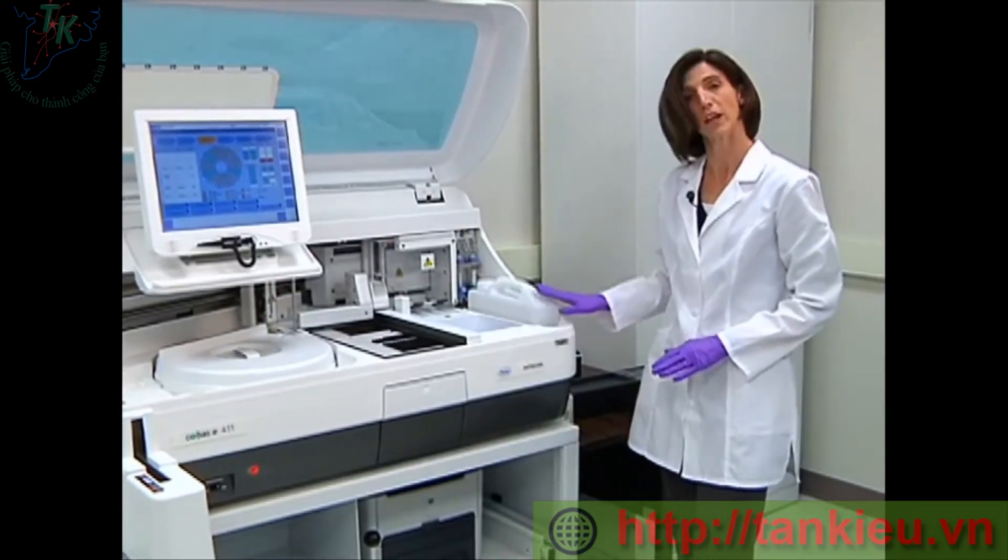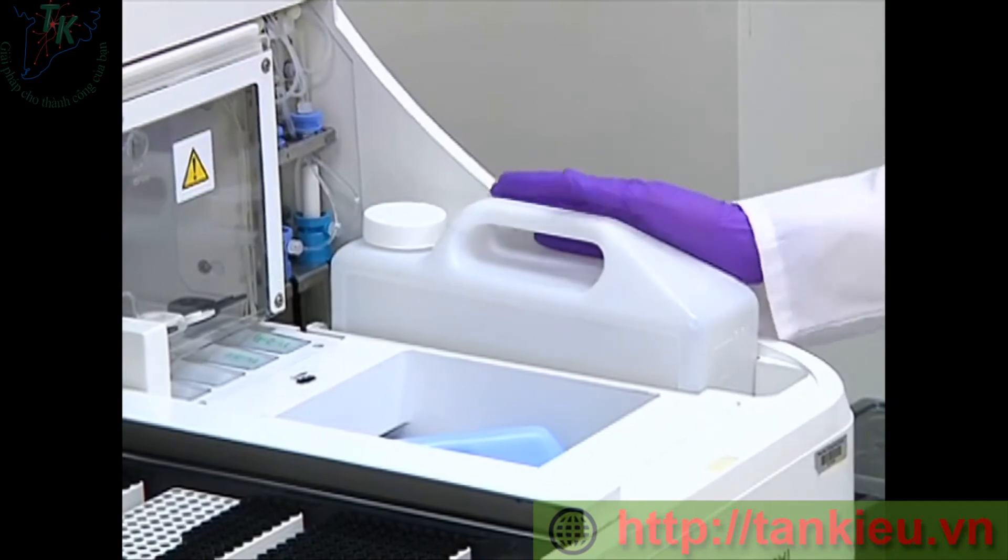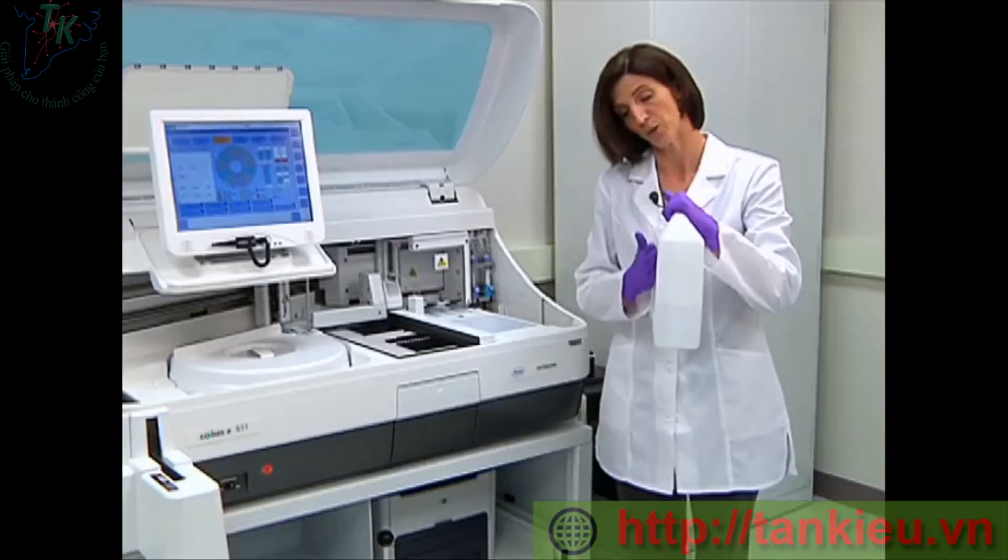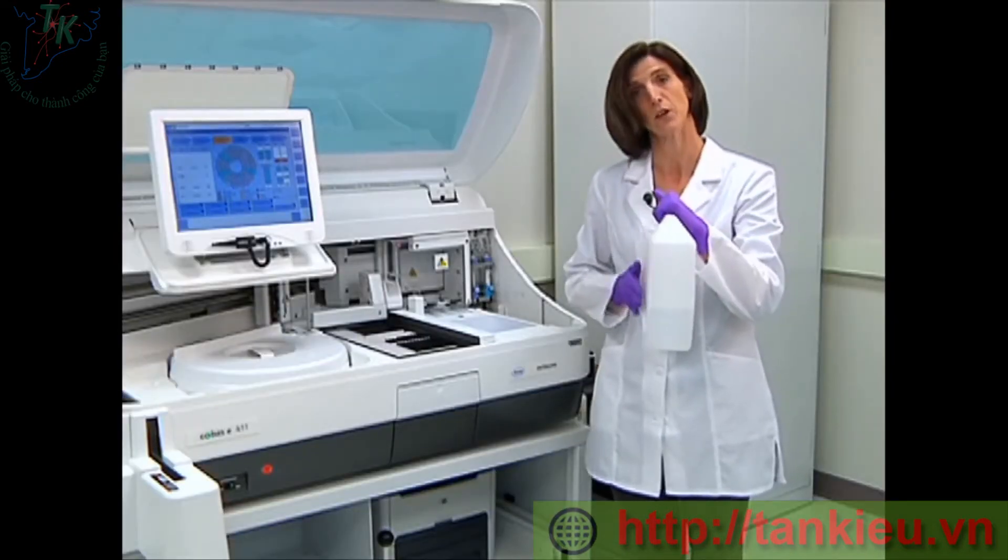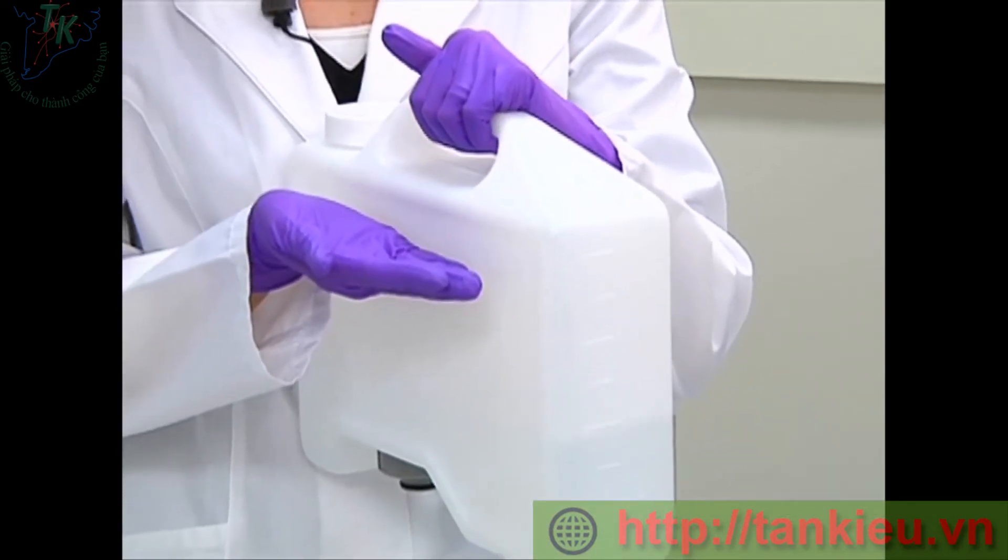Next, we will take a look at our water and our waste. The system water, located on the right-hand side of the instrument, needs to be filled to the 3-liter mark. So if there's any water remaining in the container, we would dispose of that water and then fill to the 3-liter mark with DI.